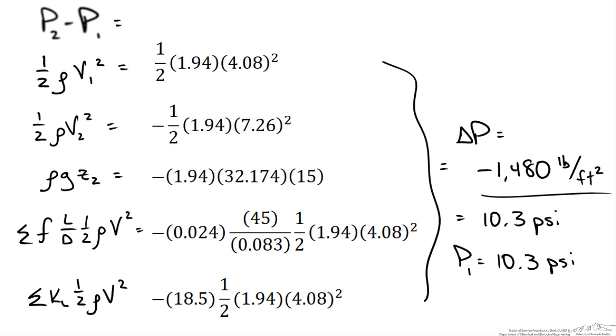So hopefully this gives you an idea on how to calculate the pressure drop given certain components of our piping system and the flow characteristics. In another screencast we will use a very similar problem to determine the flow rate if that was our unknown.